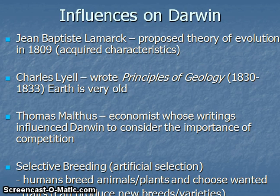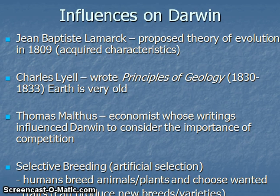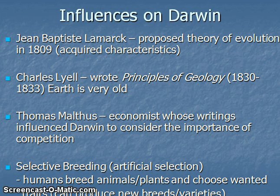We also have Thomas Malthus, who was an economist who wrote about the importance of competition. Malthus was thinking about competition between businesses, but Darwin applied these ideas to the natural world, asking why animals wouldn't be competing with each other for food, space, or water. Darwin also had an interest in selective breeding — artificial selection — where humans breed animals and plants choosing wanted traits, producing new breeds or varieties. Darwin asked: if it is possible to breed animals and plants to bring about changes, couldn't nature do the same thing?